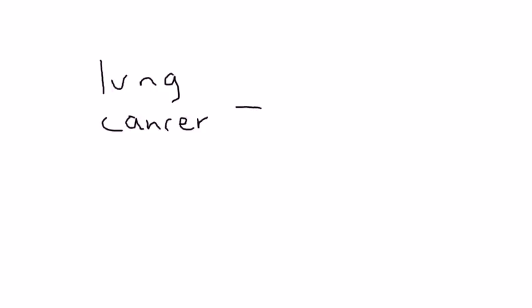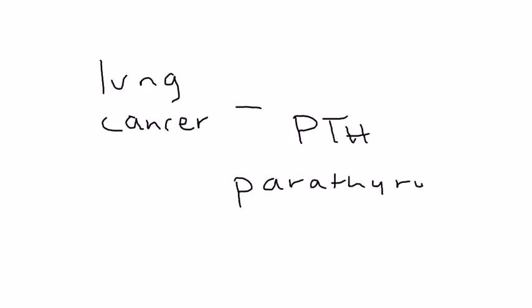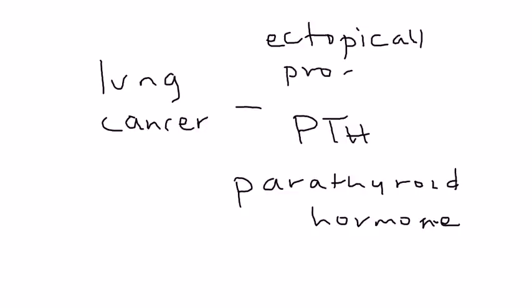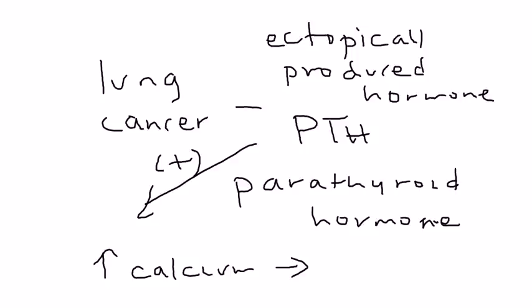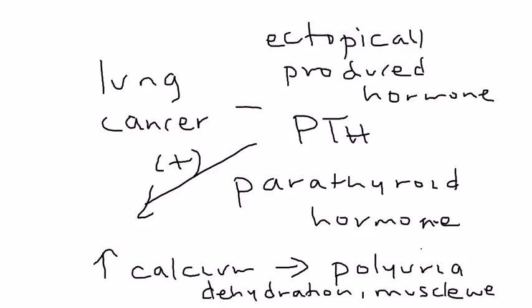Another example: the tumor is a lung cancer, or lung tumor. The ectopically produced molecule is PTH — parathyroid hormone. Parathyroid hormone, as many of you know, increases calcium levels directly. Hypercalcemia, or increased calcium levels, can lead to polyuria, dehydration, and muscle weakness.